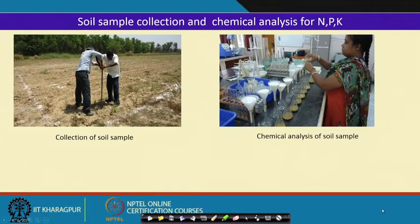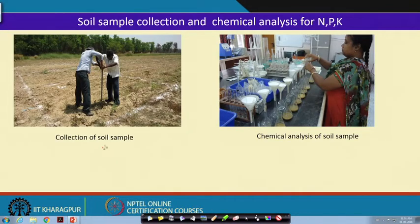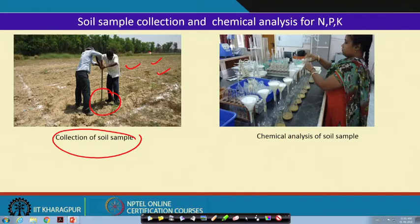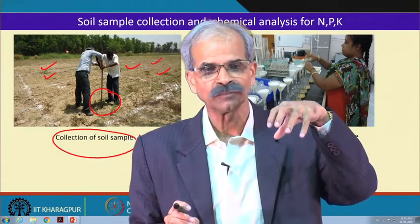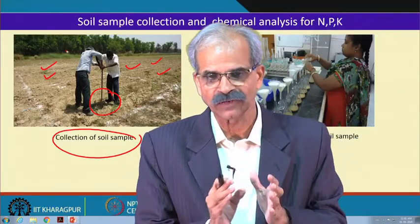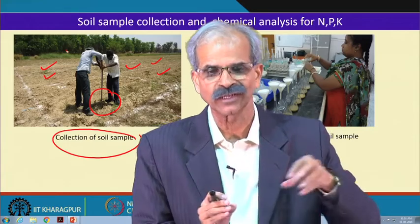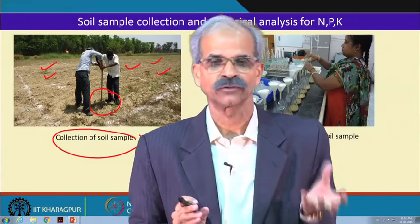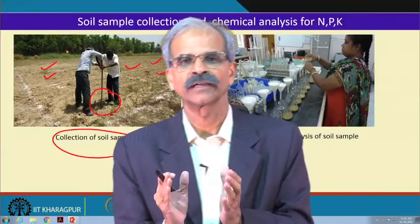For soil sampling, the collection of soil samples is very important from each of the grids. How many samples you should take depends on the grid size. In a grid of say 5 by 5 meters or 2 by 2 meters, you can take samples from the center and from the sides or corners. If the grid is larger, you can take more samples accordingly.